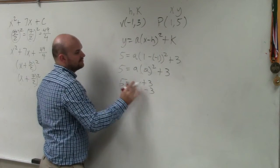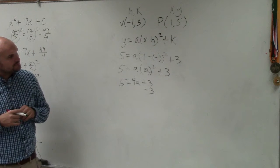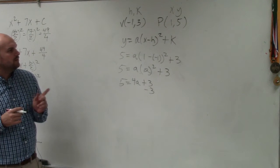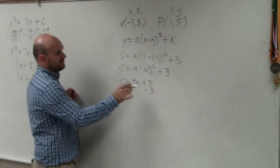2 squared is going to be 4. 1 plus 1 is 2. That's a positive 3. Subtract 3. You get 2 equals 4a.